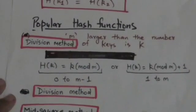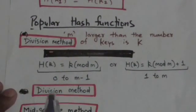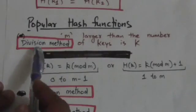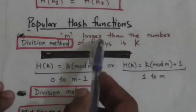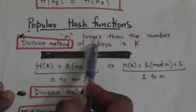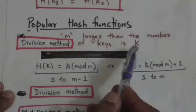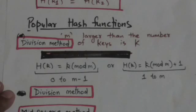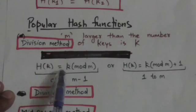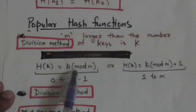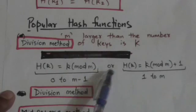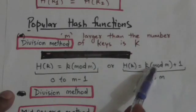Now we will study about some popular hash functions. The first one is the division method. In this method, we choose a number m which is larger than the number of keys in the key set. To minimize the number of collisions, m is usually chosen to be a prime number or a number without small divisors.